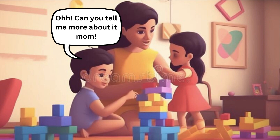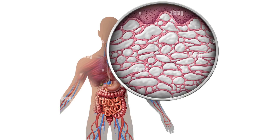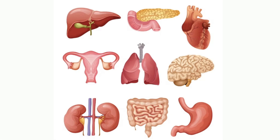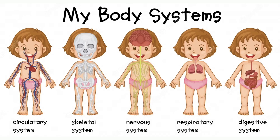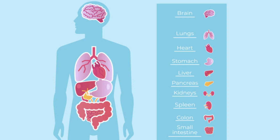Can you tell me more about it mom? I am really curious to know about cellular organization. Sure sweetheart — cells are arranged together to form something called tissues. Tissues are arranged together to form organs. Organs come together to form organ systems. Many organ systems form an organism.